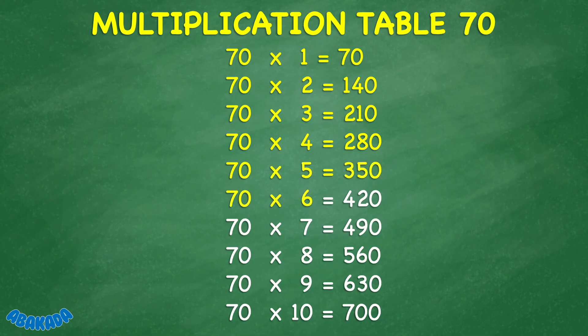70 times 6 equals 420. 70 times 7 equals 490. 70 times 8 equals 560. 70 times 9 equals 630.